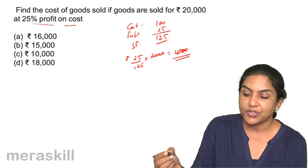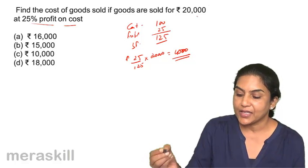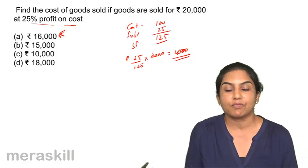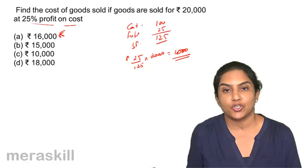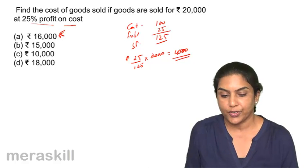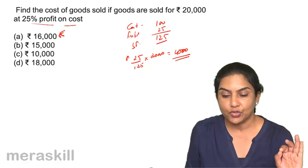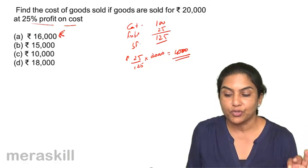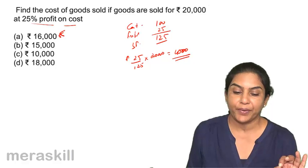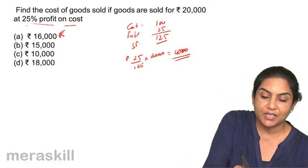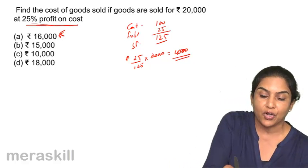Therefore, what is the cost? 20,000 minus 4,000 — 16,000 must be the cost of the goods sold. Find the cost of the goods sold if goods are sold for 20,000 at 25% profit on cost.